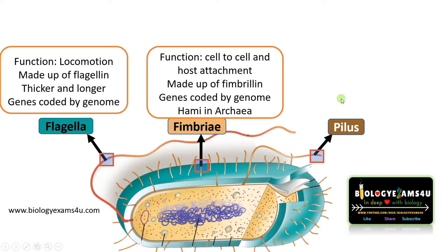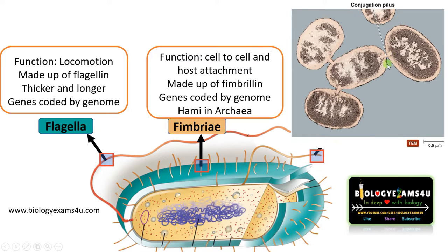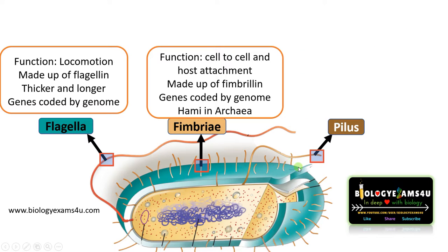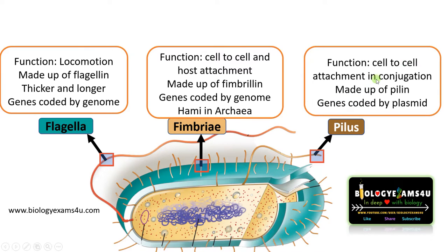The third structure is pilus. Pilus is meant for cell-to-cell attachment during sexual conjugation in bacteria. The donor bacterium with the fertility factor has the genes for pilus encoded in the fertility plasmid, which forms the pilus. Pilus is often very few in number, often less than 10. It is made up of a protein called pilin. The genes are encoded by the plasmid of the donor, called the fertility plasmid, which is transferred during conjugation of an F-plus donor and an F-minus recipient bacterium.